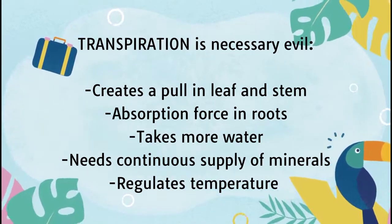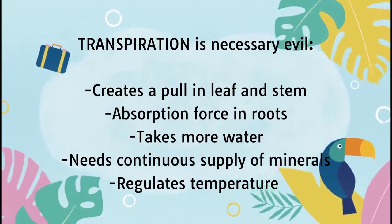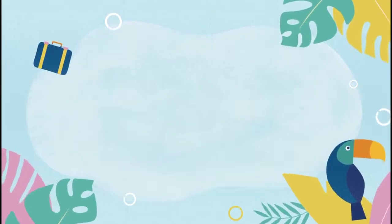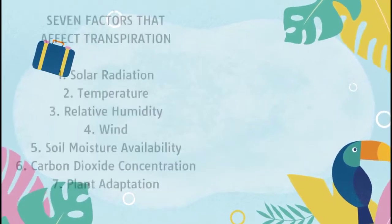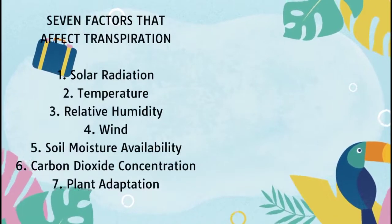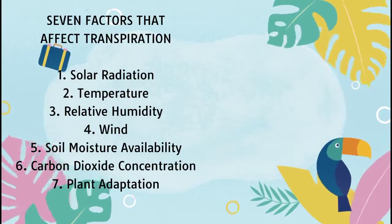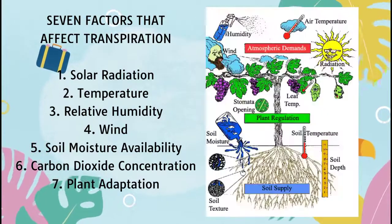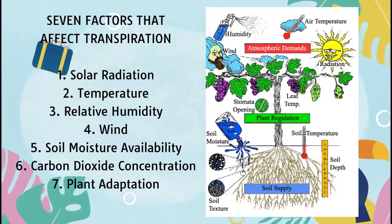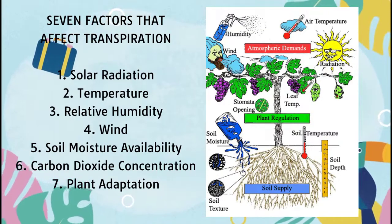Plants need to cool themselves for several reasons. We have 7 factors that affect transpiration, which are: solar radiation, temperature, relative humidity, wind, soil moisture availability, carbon dioxide concentration, and plant adaptation.